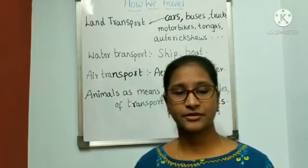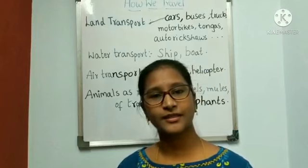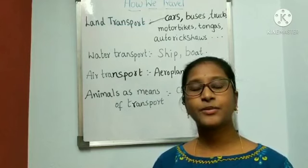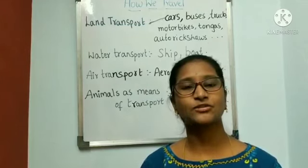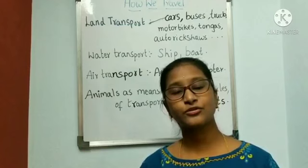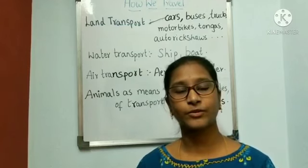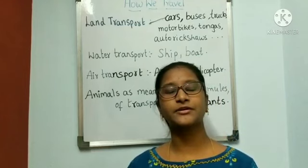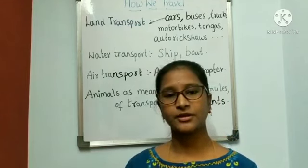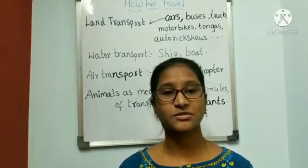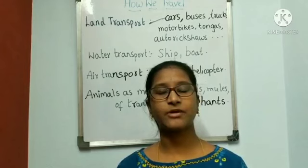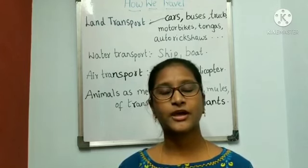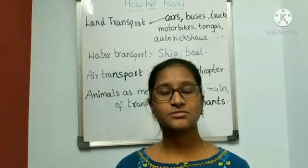Now let us learn about air transport. Some means of transport fly in the air. Examples like aeroplanes and helicopters. An aeroplane is a very fast means of transport. It is also used to carry goods and letters from one country to another. People who want to travel from one city or country to another can use air transport because it is a fast means of transport. For example, if I want to go from India to USA or India to London, I can choose aeroplane as my means of transport.